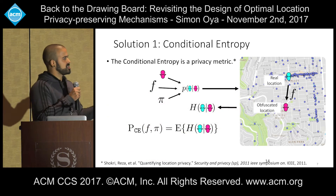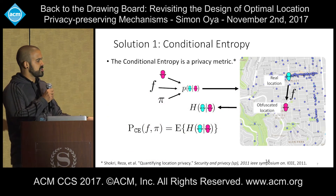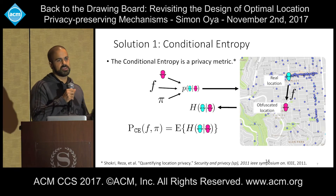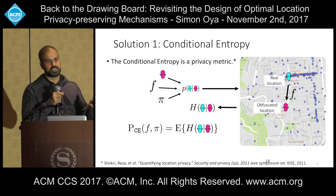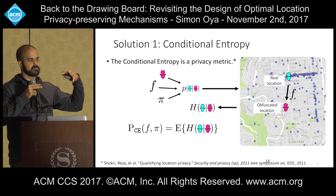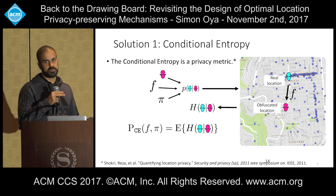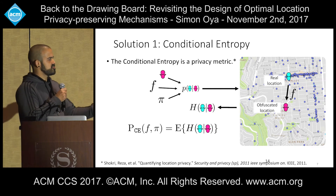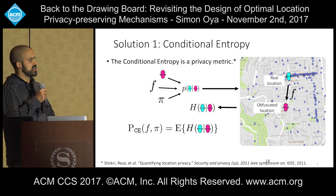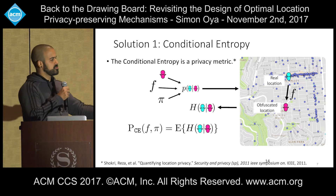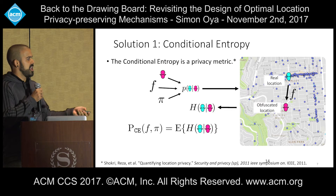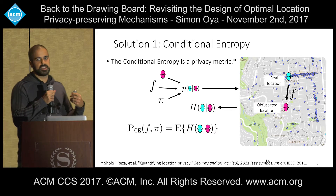The privacy metric we propose is the conditional entropy. The conditional entropy was studied in similar prior work but was disregarded as a useful privacy metric because it is not correlated with the adversary error. What we argue here is that precisely because they are not correlated, they give different views on the privacy properties of a mechanism. After observing the obfuscated location, the adversary can build a posterior on all the input locations. The entropy of this posterior gives the uncertainty the adversary has when trying to estimate the real location, and averaging this gives the conditional entropy.